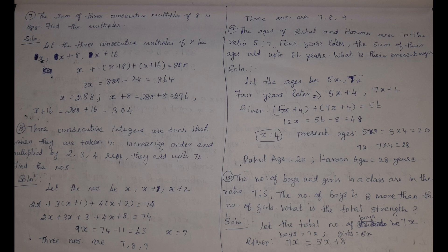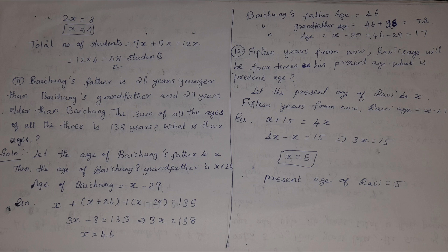Tenth problem: the number of boys and girls in a class are in the ratio 7:5. The number of boys is 8 more than the number of girls. What is the total strength? Let boys = 7x and girls = 5x. So 7x = 5x + 8, giving x = 4. Total students = 7x + 5x = 12x = 12 × 4 = 48 students.